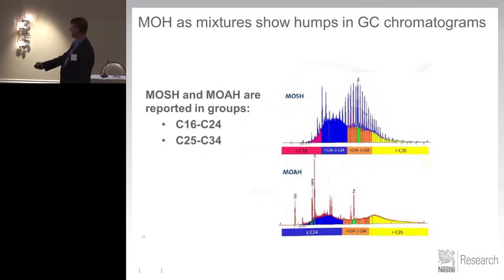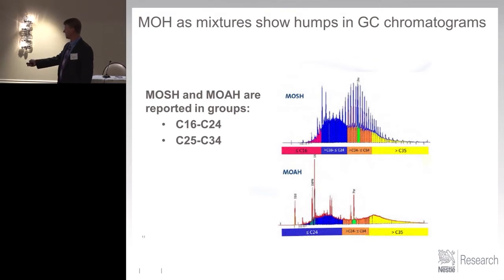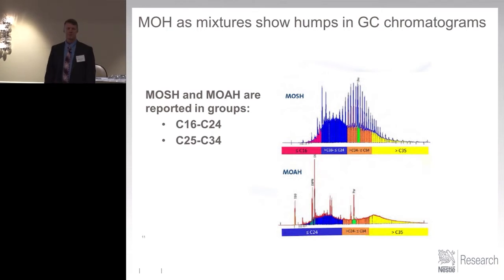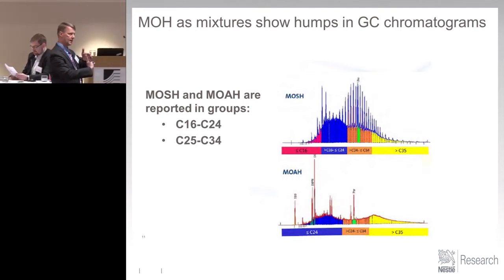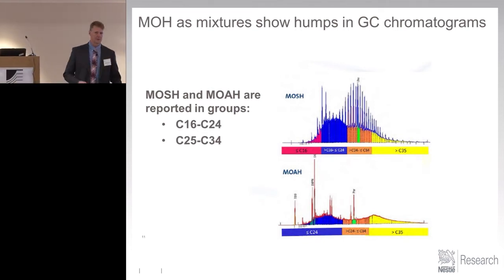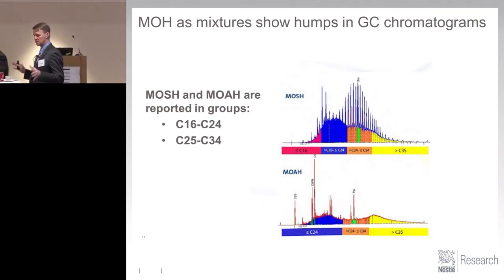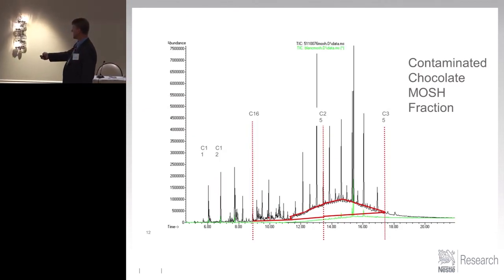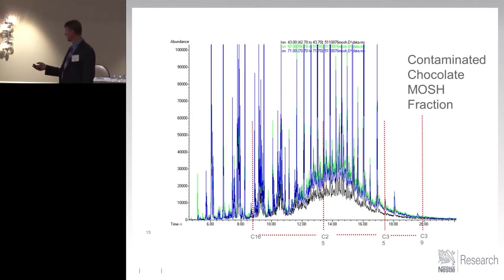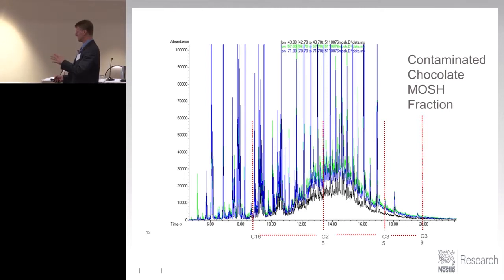Here's a chromatogram. You have the MOSH fraction here and the MOAH fraction. They're typically reported in C16 to C24 and then C25 to C34 — you typically don't see much above C35. Contamination in the C16 to C24 range can be done in the gaseous phase; you do not need intimate contact with the product. For C25 to C34, that's when you're talking about direct contact with the ingredient or food itself. Here you have contaminated chocolate MOSH fraction — see this nice little hump here. When you go into the ion extract, you will also see the humps, which is a key indication that you're dealing with mineral oil.